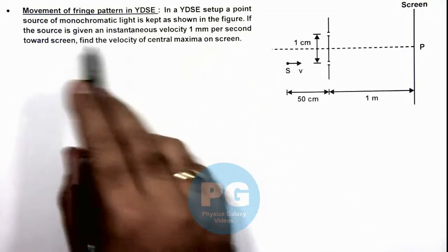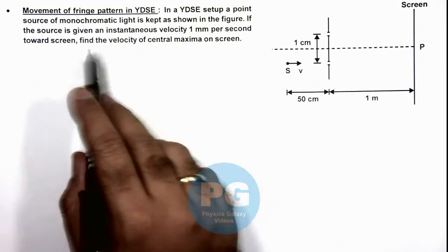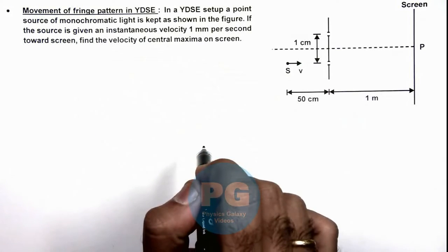If the source is given an instantaneous velocity of 1 millimeter per second toward the screen, we are required to find the velocity of central maxima on screen.